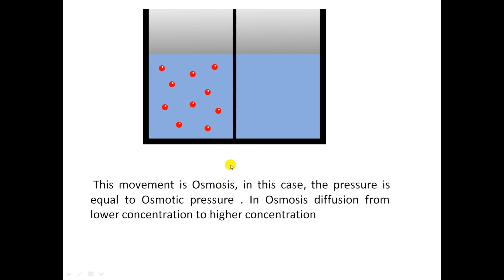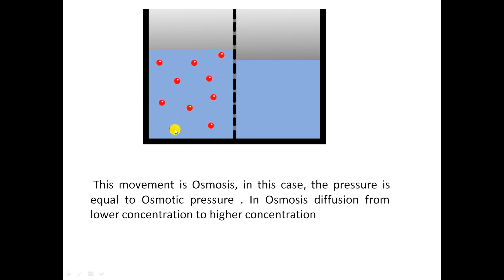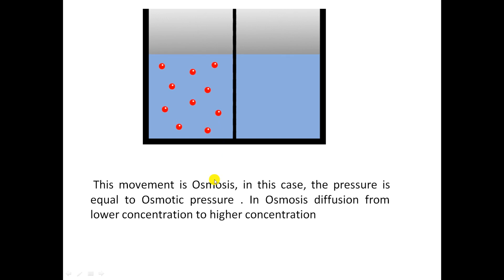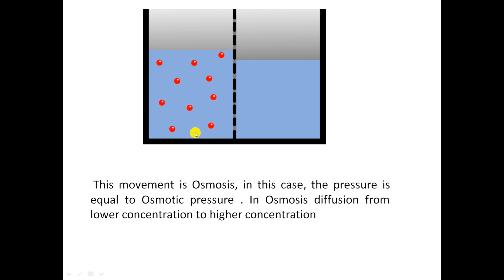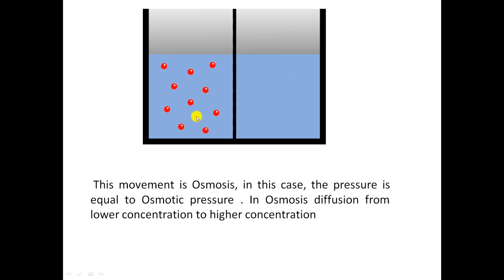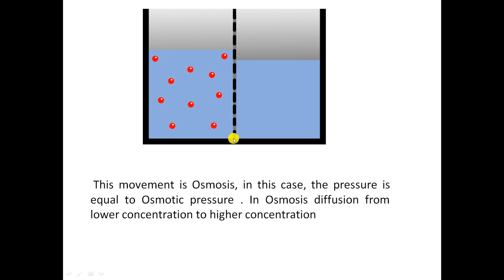In this animation, we are going to see the osmosis process. The blue color solution is the solvent and the red molecules indicate the solute molecules — the blue color is water and the red balls are salt ions present in the water. When this solution is separated from the lower concentrated solution (water), water will move from the lower concentration to the higher concentration side in order to balance the potential. This is what we call osmosis — water is moving from the lower concentration to higher concentration through the semipermeable membrane.